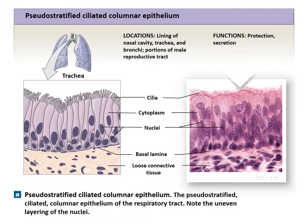Pseudostratified epithelium is found throughout the respiratory tract in the nasal cavity, trachea, and bronchi, and it is always ciliated. All the cells rest on the basal lamina, but the nuclei are at various distances from the surface. The cilia on top provide protection and secretion — in the case of the respiratory tract, they allow you to move dust or pathogen compounds up against the gradient of the respiratory tract and get things out of the lungs to protect you.